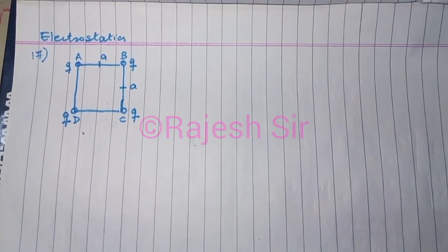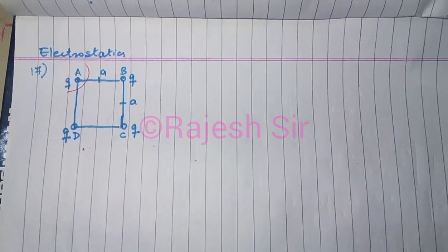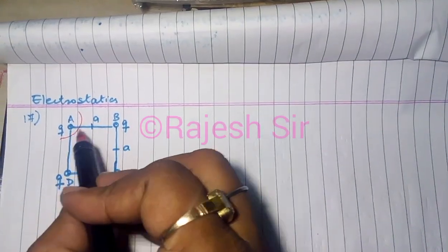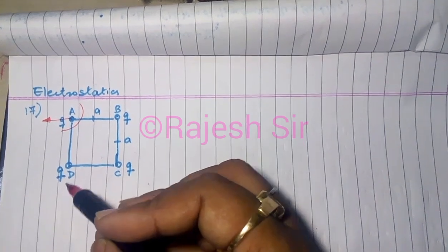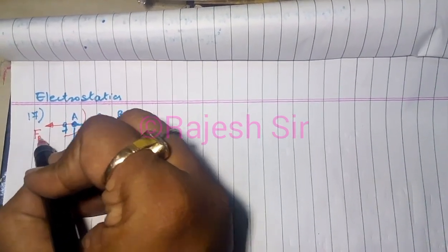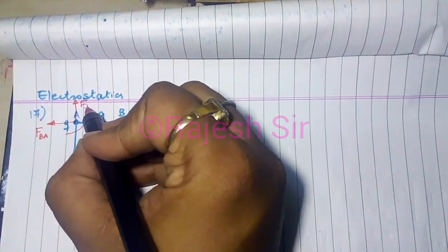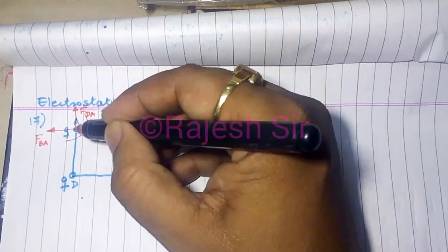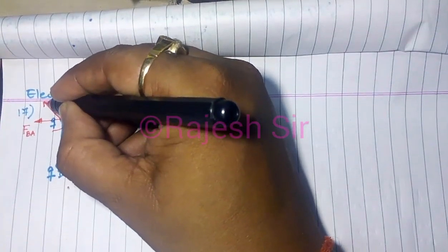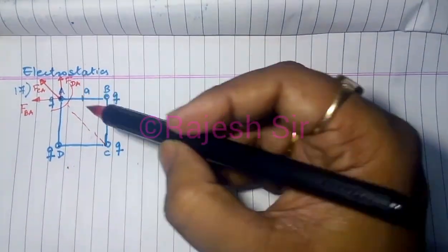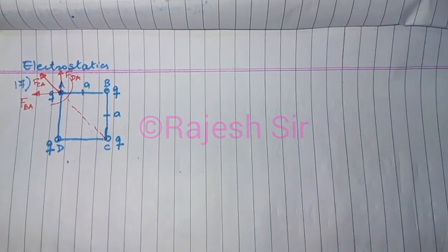Let us find the force that each charge exerts on the others. I am going to isolate the charge at A and find the net force experienced by it. Since B, C, and D all carry the same sign charge as A, each will repel A — so A feels repulsive forces from B, D, and C.